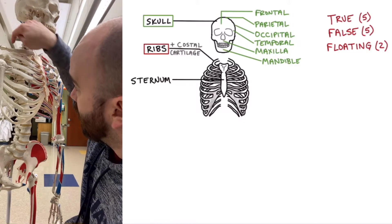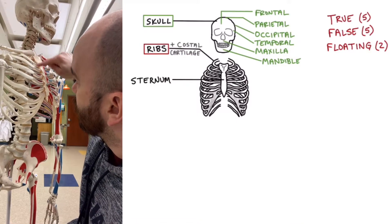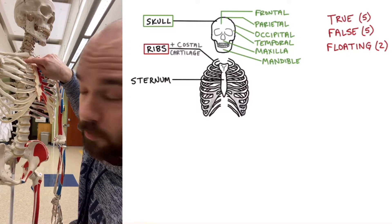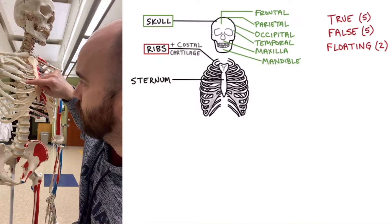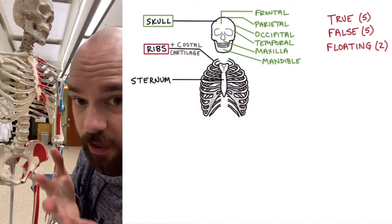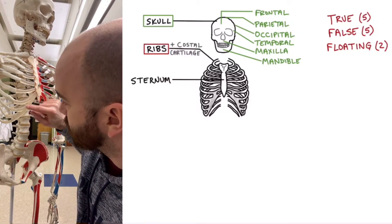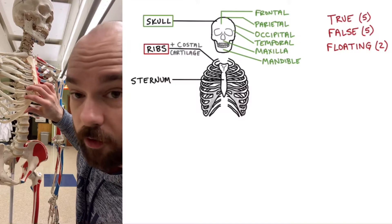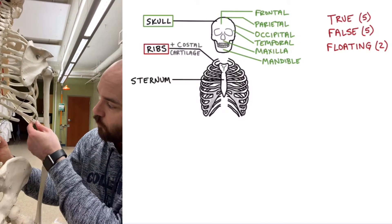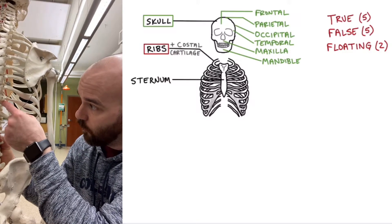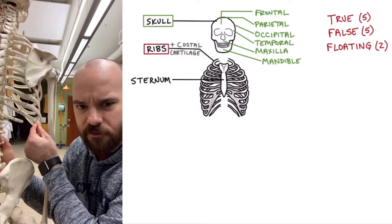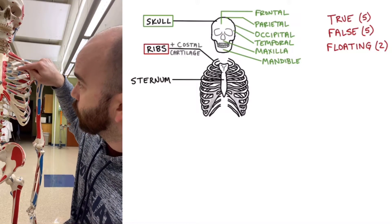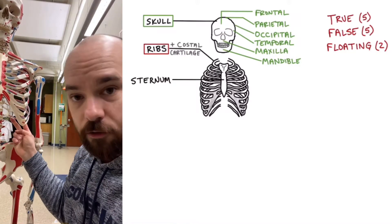We have 5 pairs of true ribs. The false ribs are where the rib connects to a piece of costal cartilage that joins with other costal cartilage. So we've got 5 false ribs. And finally, we have 2 pairs of floating ribs. The floating ribs actually don't connect in the front — they start with the vertebrae and just extend out and float there. So 12 pairs of ribs total: 5 true ribs, 5 false ribs, and 2 floating ribs in the back.